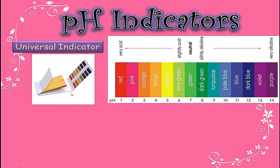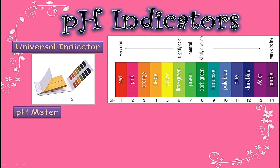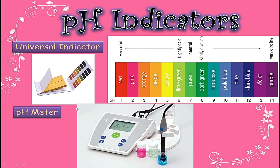pH paper is a form of universal indicator which can accurately determine each pH value of any substance. More accurate than the universal indicator is the pH meter — an electronic device which can give accurate readings of pH value, even in decimal points. An electrode is attached with this meter; this electrode is dipped into the solution, and the pH value appears on the meter.